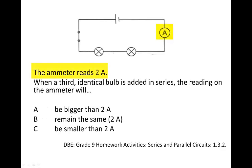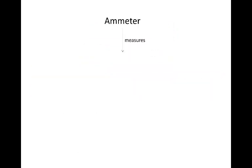In this circuit, the ammeter reading is 2 amps. When a third identical bulb is added in series, what will happen to the reading on the ammeter? An ammeter measures current strength.